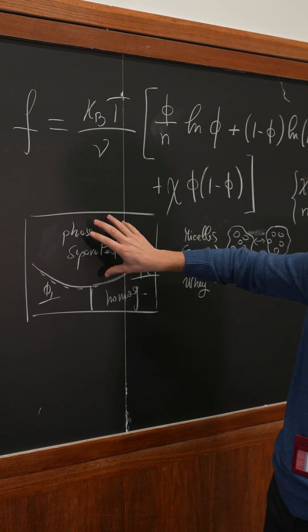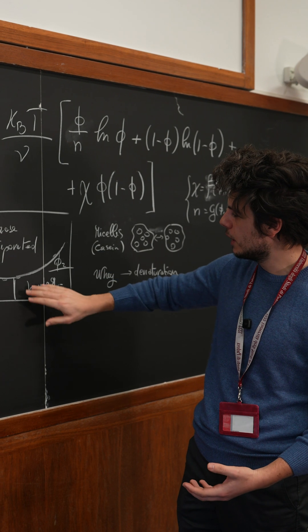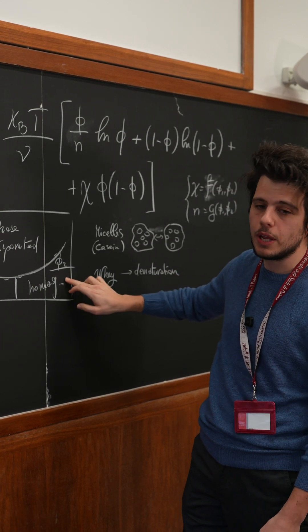So this is actually the region we want to avoid. This is the region in which the clumps are present. And this is the region we want to be in, since here we have a perfect sauce.